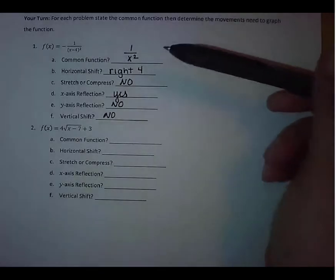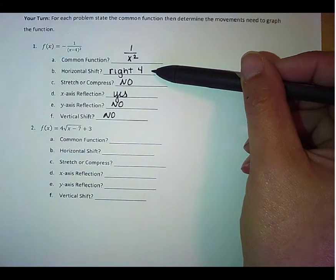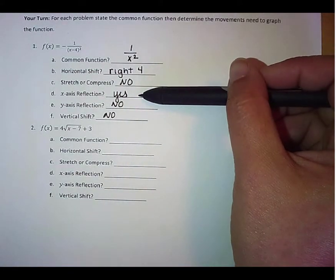So we have two movements with this. We're going to go to the right 4, and then we're going to reflect it over the x-axis.